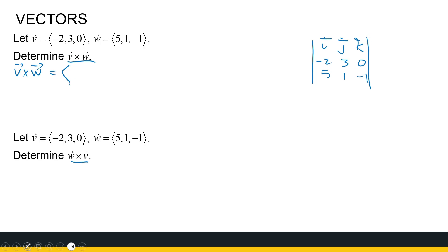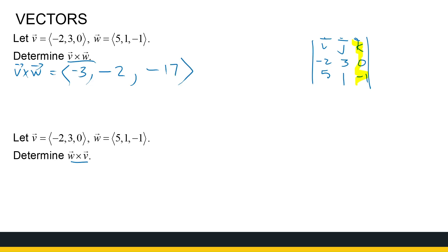For the first entry, ignore the first column: 3 times minus 1 is minus 3, minus 1 times 0 is 0, so that's minus 3. For the second entry, put a minus in front, ignore the second column: minus 2 times minus 1 is 2, minus 5 times 0 is 0, giving 2; with the minus in front that's minus 2. For the third entry, ignore the third column: minus 2 times 1 is minus 2, minus 5 times 3 is minus 15, giving minus 17. So V cross W equals (minus 3, minus 2, minus 17).